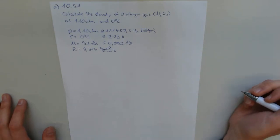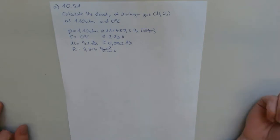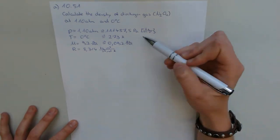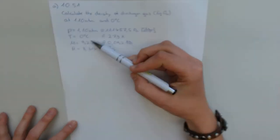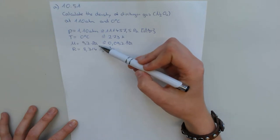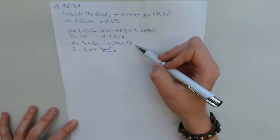So, first of all, we need to transfer the things we had given into SI units. First of all, the pressure we transfer into Pascal. The temperature we transfer into Kelvin.